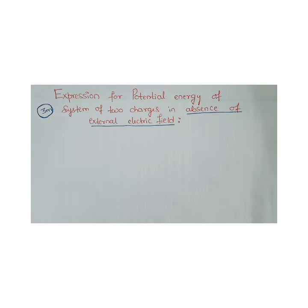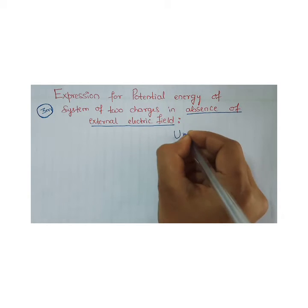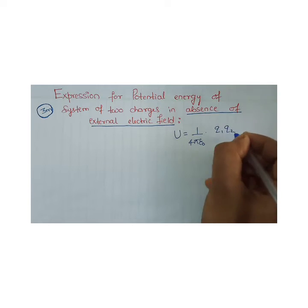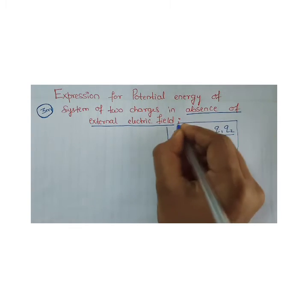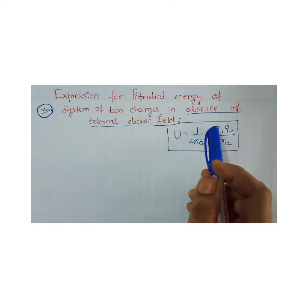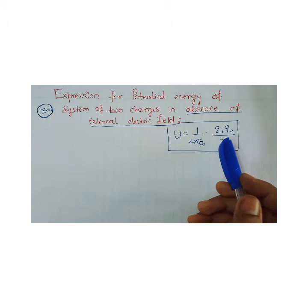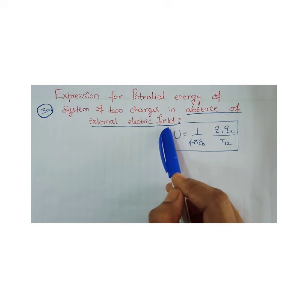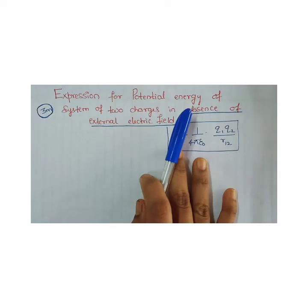In my previous video I explained about potential energy of a system of two charges in the absence of an external electric field — what happens and how the configuration is built. Now we have to derive the expression, which is U = (1/4πε₀) × (Q1 Q2 / R12). This is the expression for potential energy of a system of two charges in the absence of external field. If this question is asked in the examination, make sure you read the question thoroughly — if 'in the absence of external field' is mentioned, then you have to go with this derivation.